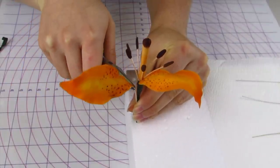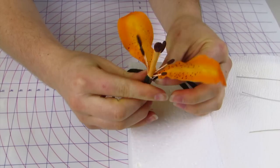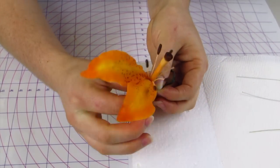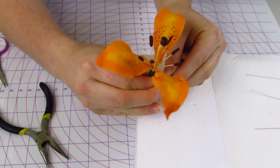So you just add the one petal. You can bend it how you want it to kind of go. And then start working your floral tape going down your pistil and your stamens.